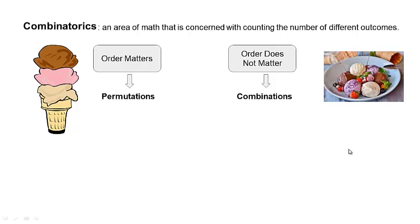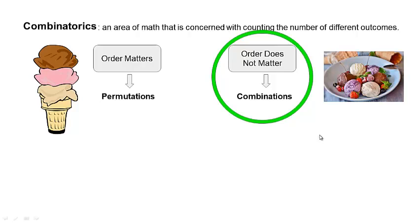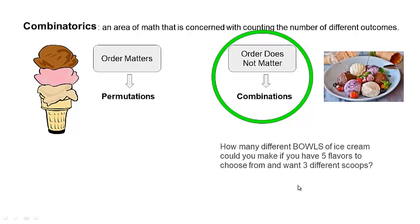We could take a whole class about combinatorics, but we just need a mini lesson right now and we're going to focus on combinations. That's going to help us see something nice about Pascal's triangle. In combinations, think of a question like this: how many different bowls of ice cream could you make if you had five different flavors to choose from and you were picking three different scoops to put in that bowl? That is the type of question we'd be working with. We're not going to be doing these questions during the binomial theorem, but we are going to be doing the math that you would use to solve them.